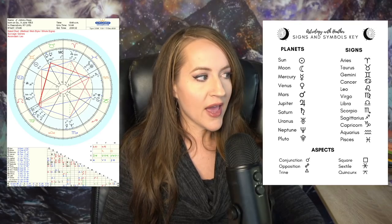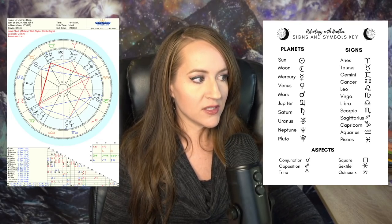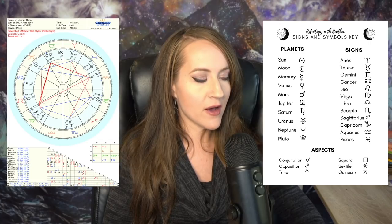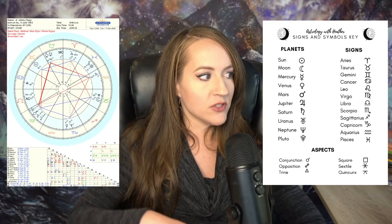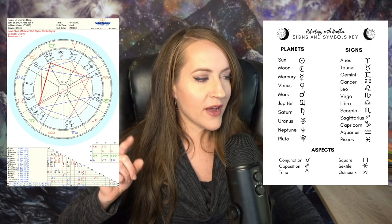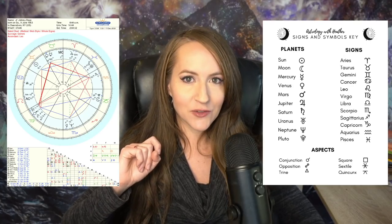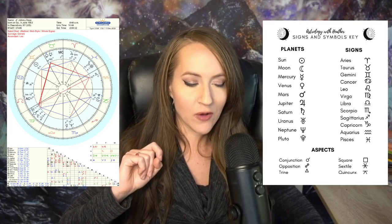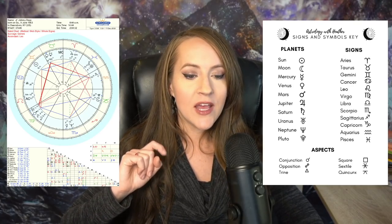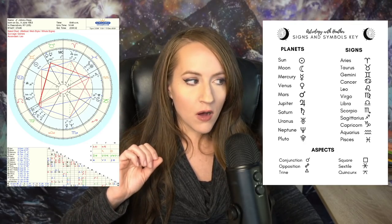When you look at the inner circle, those slices of pie are numbered. You can see the houses numbered 1 through 12. That's where you can determine in which house each of your planets will fall.